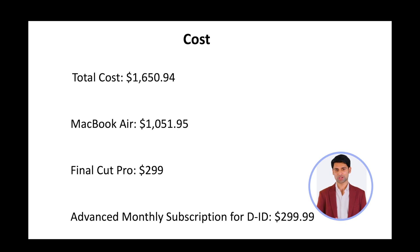I used PowerPoint for creating slides for this video. PowerPoint is part of the Microsoft 365 plan mentioned before. Our total cost to create this video is US $1,650.94: $1,051.95 for MacBook Air, $299 for Final Cut Pro and $299.99 for the Advanced monthly subscription for D-ID. MacBook Air and Final Cut Pro are long-term investments and not going to be used for this video only. With the monthly D-ID subscription, I can create 125 minutes of video.